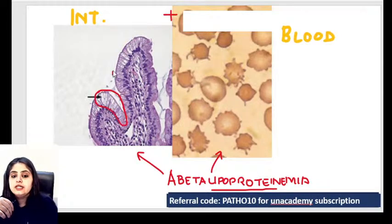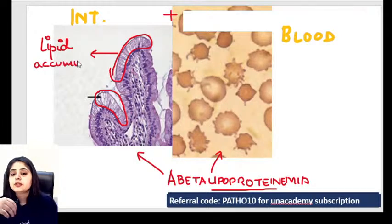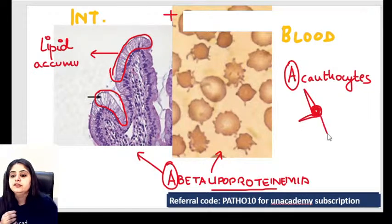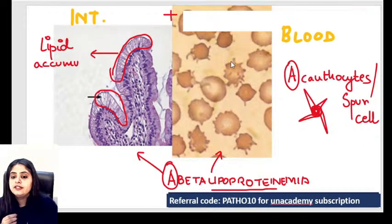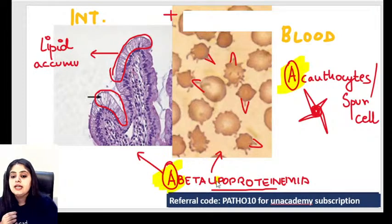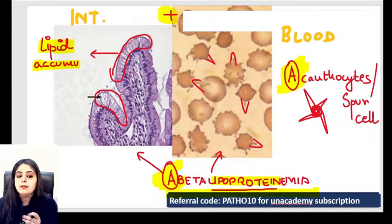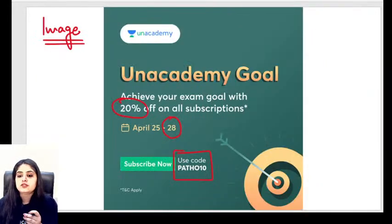In abetalipoproteinemia — a lipid disorder — intestinal cells appear whitish due to lipid accumulation. In the blood, 'a' for abetalipoproteinemia shows acanthocytes — red blood cells with characteristic spikes, also called spur cells. Both intestine and blood are affected, confirming abetalipoproteinemia.